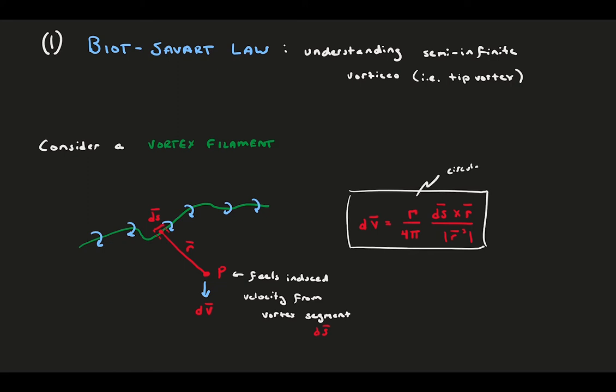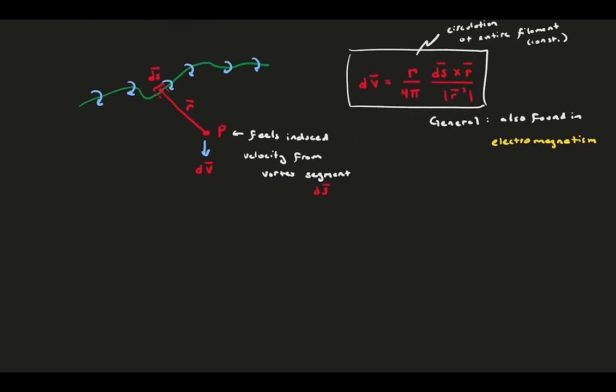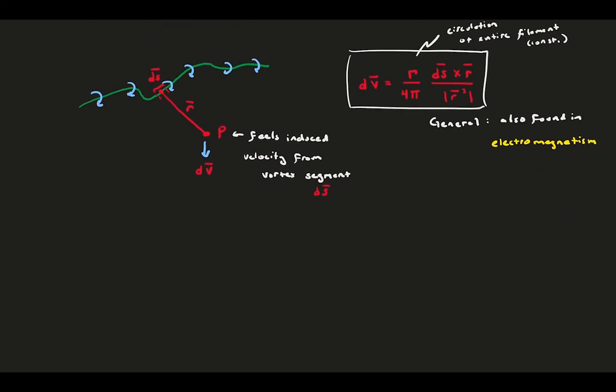The induced velocity increases with the vortex circulation, or the strength of the vortex, and decreases with increased distance from the vortex. This law is actually common even outside of aerodynamics and works in general. Specifically, you might see it in fields like electromagnetism.